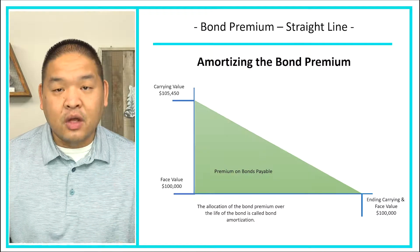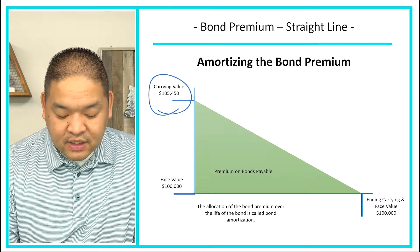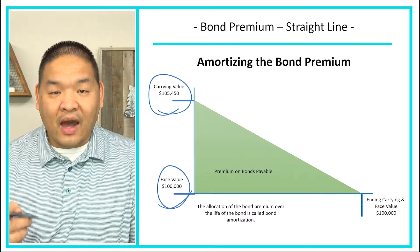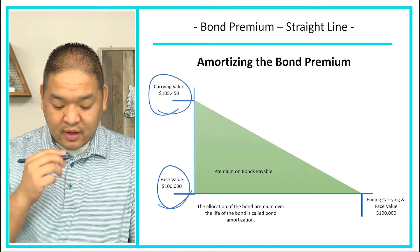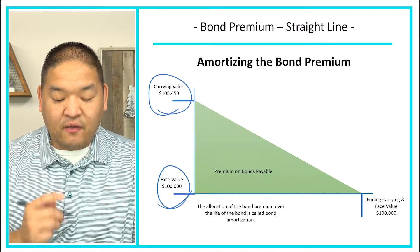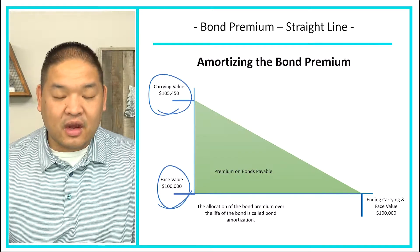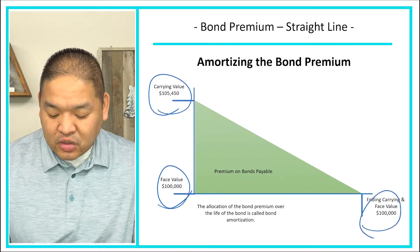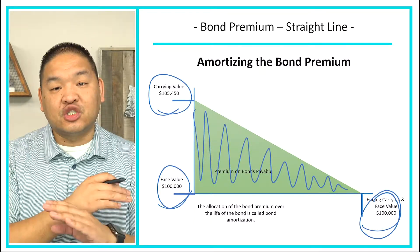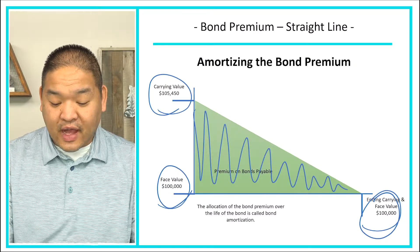To review what we're doing: assume we issue a bond at $105,450 and the face value is $100,000. Our job is to allocate this difference between its face value and its carrying value — the $5,450 — over the life of the bond payable so that we can get the carrying value and the face value to $100,000. We're going to spread it over the useful life of the bond.